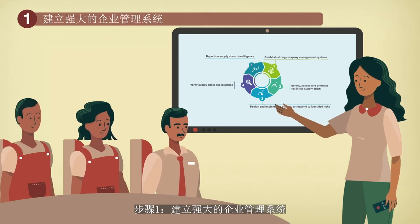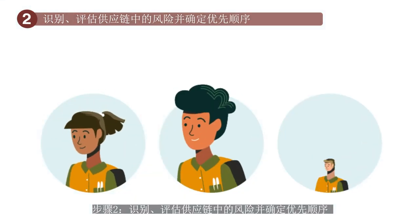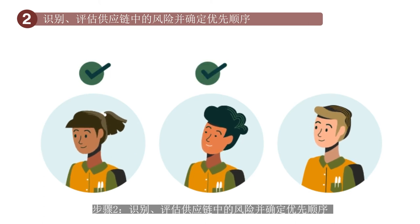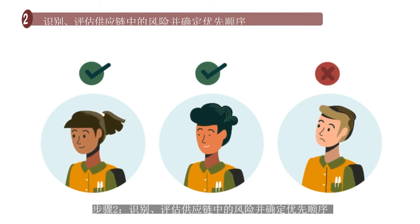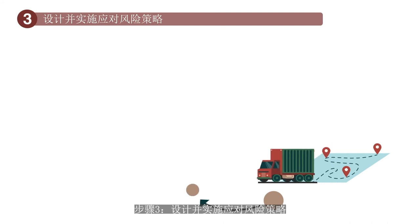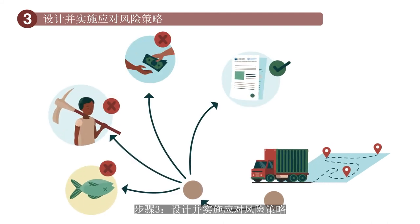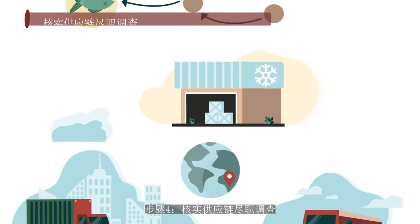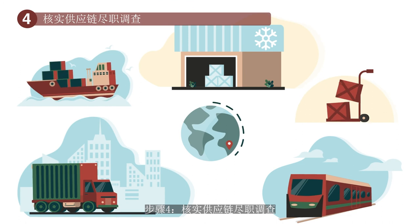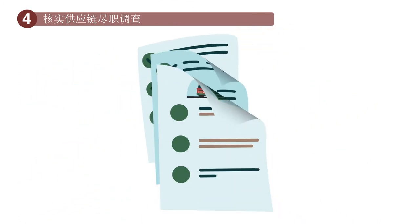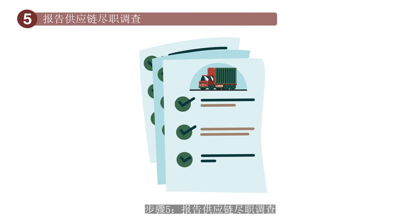Step 1: Establish strong company management systems. Step 2: Identify, assess and prioritise risks in supply chains. Step 3: Design and implement a strategy to respond to risks. Step 4: Verify supply chain due diligence. Step 5: Report on supply chain due diligence.